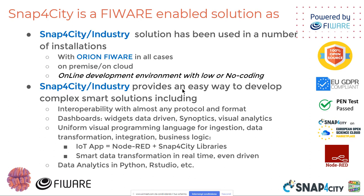For this reason, we think this is an easy way to develop a smart and complex solution with large interoperability, exploiting the components of FIWARE but also the capabilities of Node-RED, and the dashboard with Synoptics, Visual Analytics, and Kibana, which is a sister of Grafana in the Open Distro, is very powerful. We have a uniform visual language for all the analytics that you need for data transformation, integration, and so on. Data analytics is mainly performed in Python and R Studio, transformed directly into containers that we manage in the cloud or in a small installation deployed in the plant, because in most cases the industry would like to have their own on-premise installation.